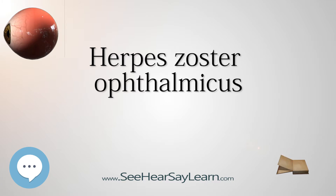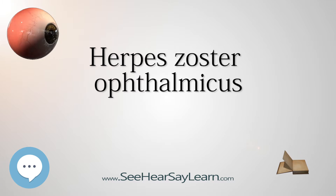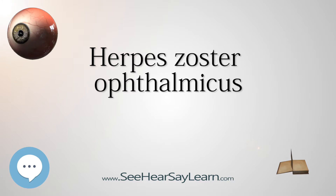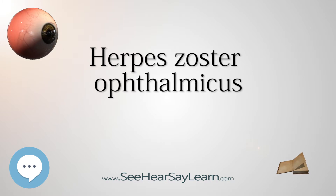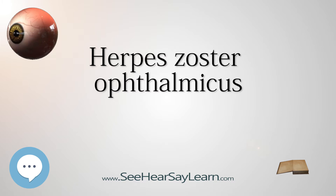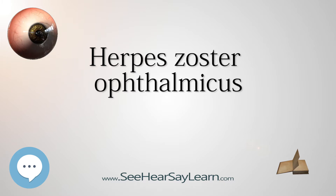Neurotrophic keratitis results from corneal nerve damage, causing a persistent epithelial defect, thinning, and even perforation. The cornea becomes susceptible to bacterial and fungal keratitis. This is a chronic, late-onset, uncommon complication. Mucus plaques present as linear gray elevations loosely adherent to the underlying diseased epithelium or stroma, also chronic, with onset between 3 months and several years after the onset of the rash.